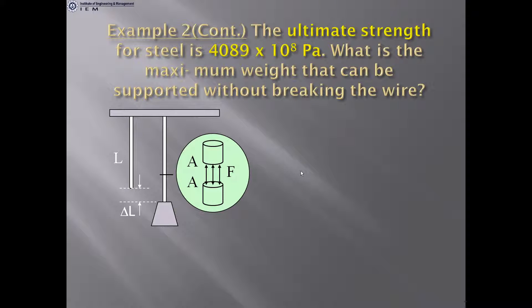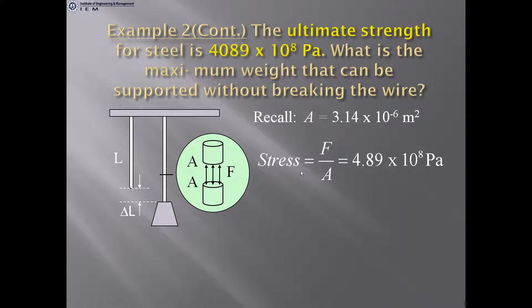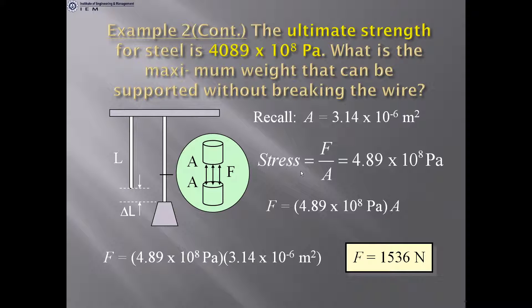Another example: The ultimate strength for steel is 4.08 × 10⁸ Pascal. What is the maximum weight that can be supported without breaking the wire? Using A = 3.14 × 10⁻⁶ m² and the stress value given as 4.89 × 10⁸ Pascal, multiplying stress by area gives F = 1536 Newton.